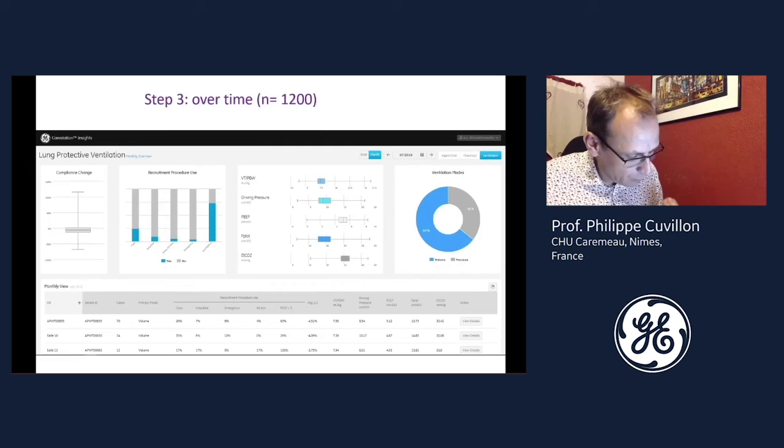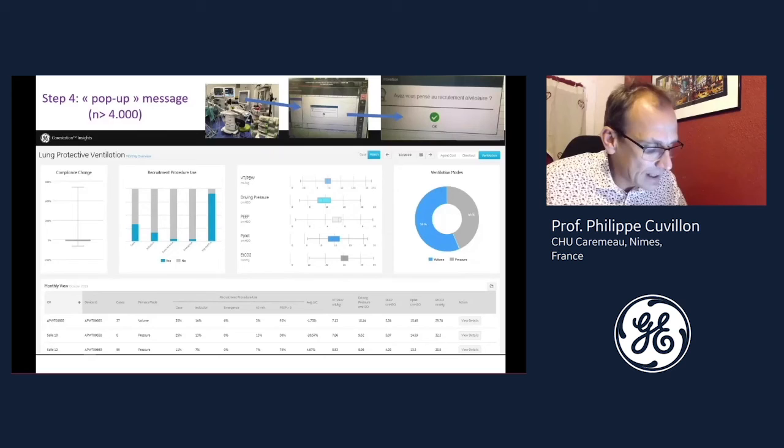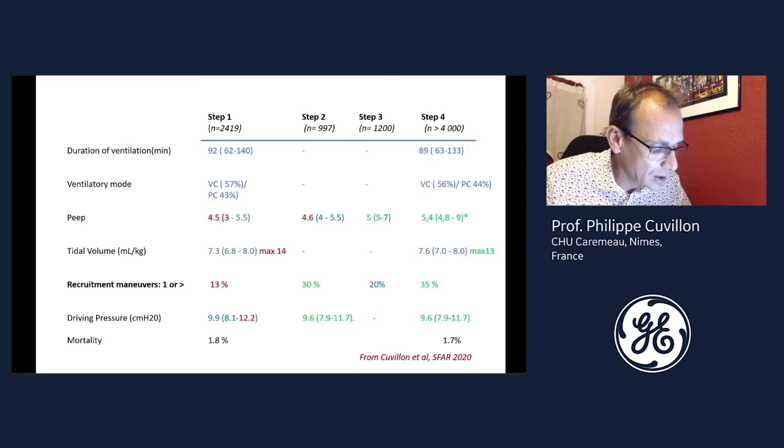For step four, a pop-up message appeared just after intubation on the screen of the anesthesia clinical information system, and you can read it: Have you thought about alveolar recruitment? Here are the trends for the four steps. All the settings were better at step four.